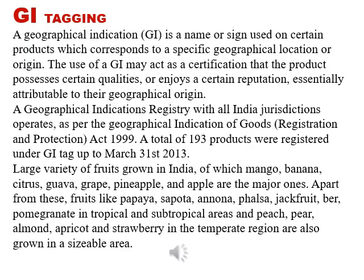Let's now talk about GI tagging. As you already know, every crop requires a specific climatic condition for its growth and development. These climatic conditions are responsible for imparting certain specific characteristics in that crop. So a GI tag acts as a kind of certification or a reputation for those attributes of the crop because of its particular geographical origin. A geographical indication registry with all-India jurisdiction operates as per the Geographical Indications of Goods Registration and Protection Act 1999.